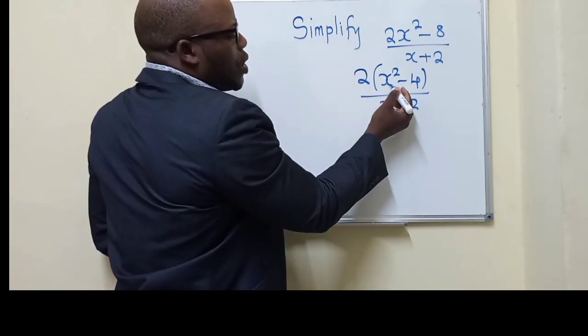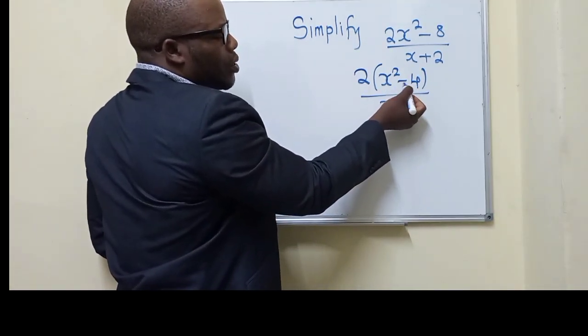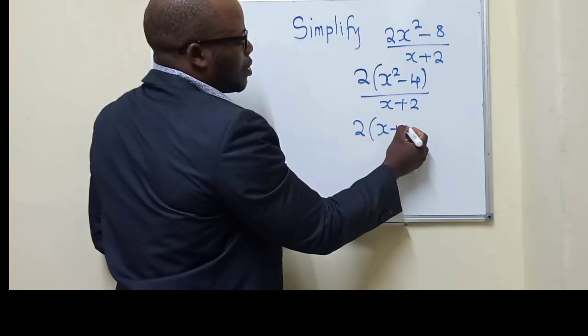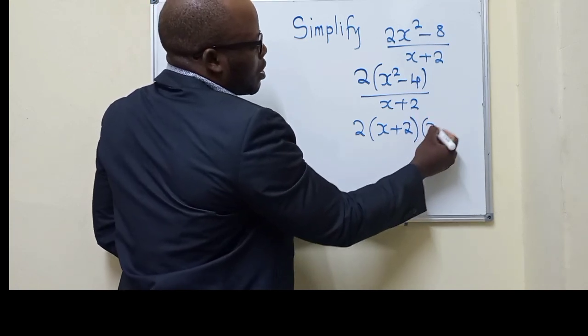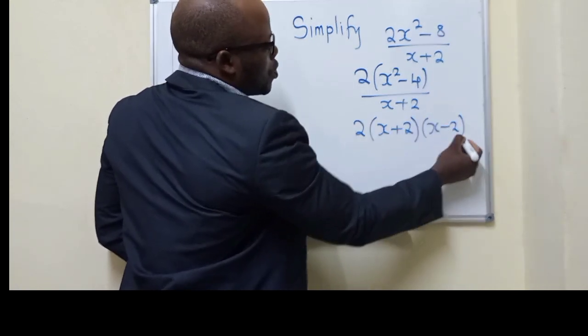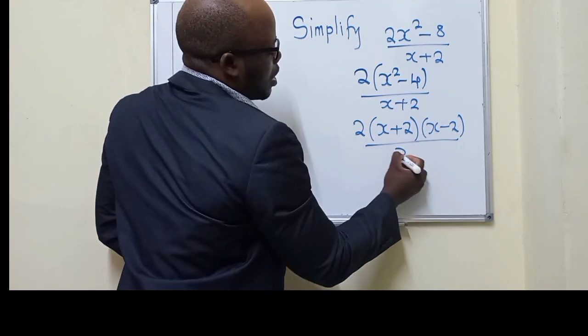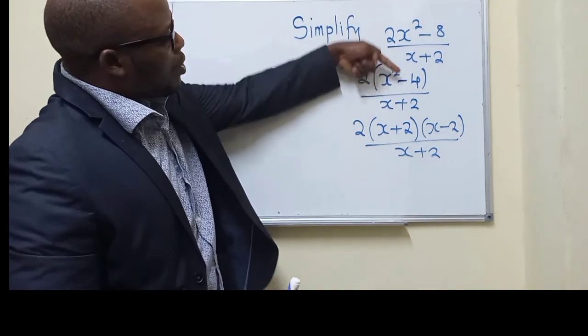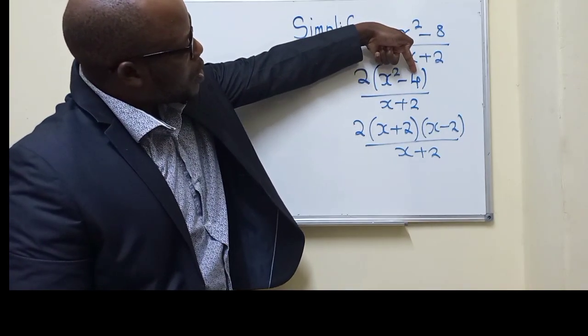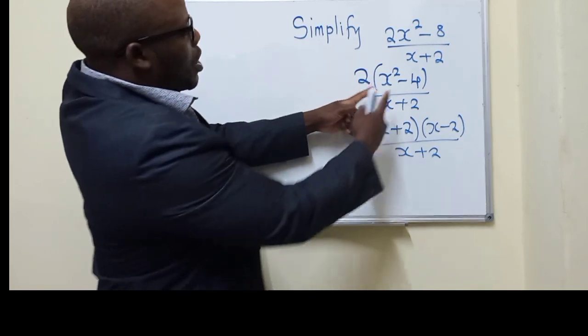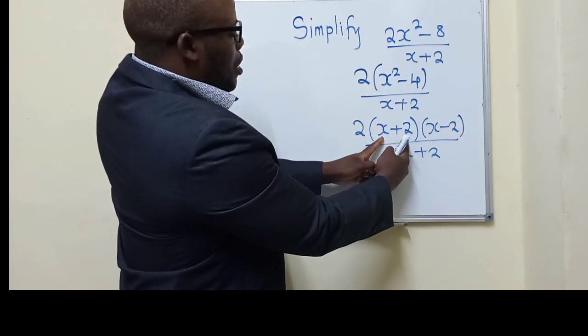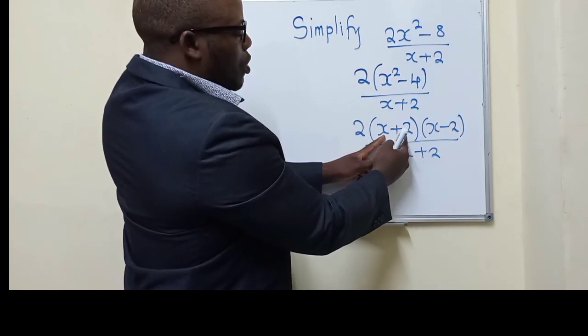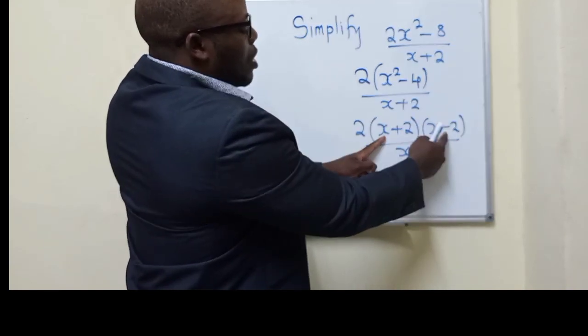From this stage, we can use difference of two squares here, right here inside. So I have 2(x + 2)(x - 2) over x + 2. So if you can see nicely, difference of two squares, you find the square root of 4, which is 2, and you get the basis. So this is what we get. You get x and the 2 which will come from here, you say plus. The same thing, you come and say minus.